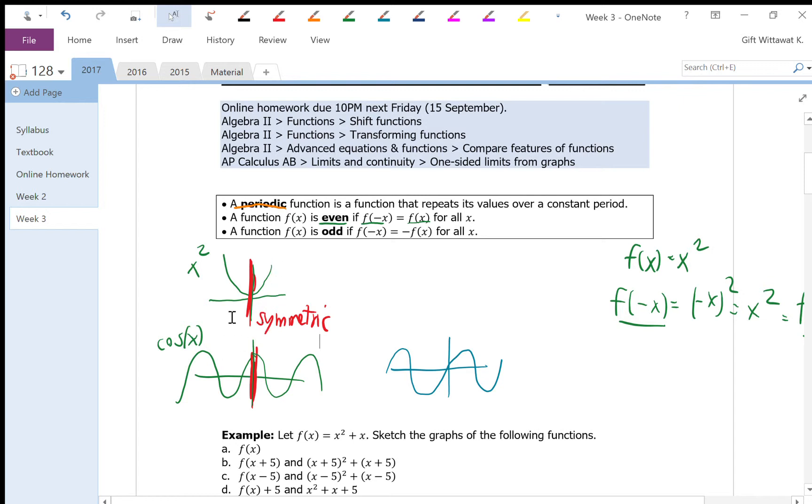You can kind of see the graph of x squared. If you reflect that over the y-axis, you get the same graph. So these two guys are even functions.